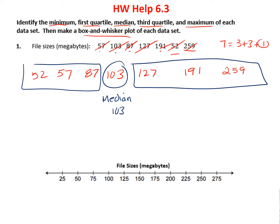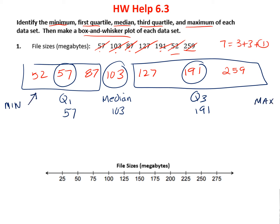So my middle number is 103. Now for the next part, we'll do the middle of the left half. There are three of them, so there's a middle there — that's my quartile 1, which is 57. The middle on the right side gives us quartile 3, which is 191. And then my minimum number is 52 and my maximum number is 259.